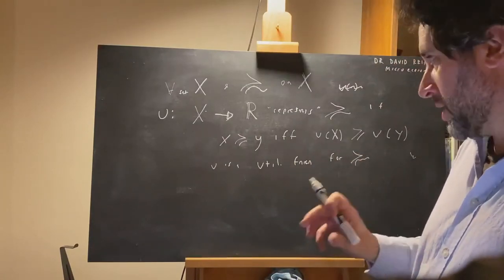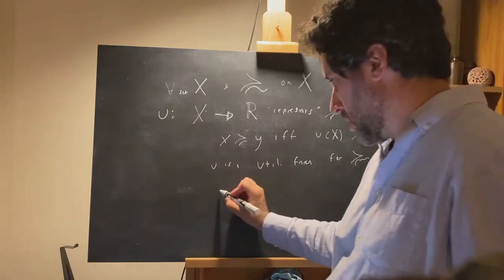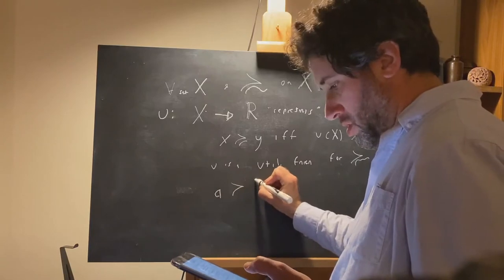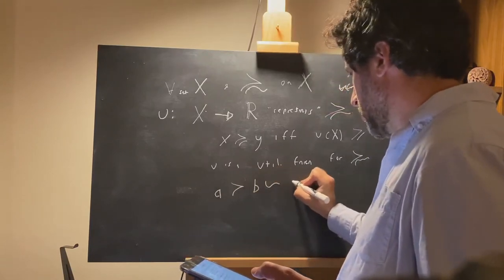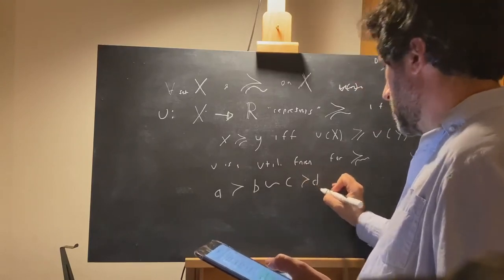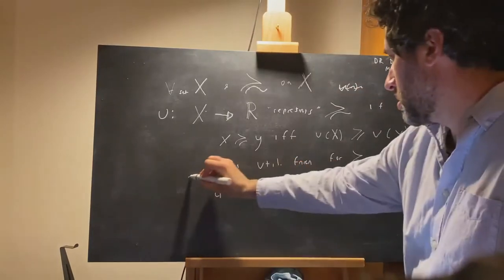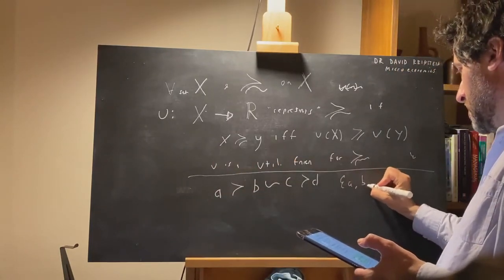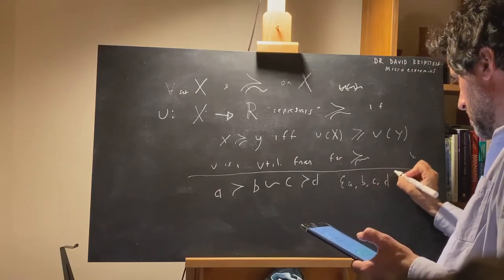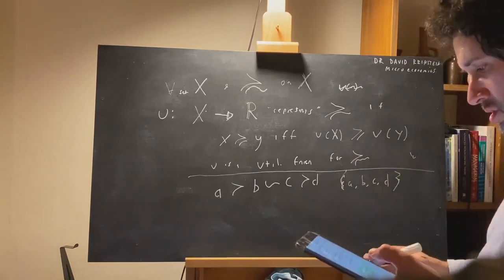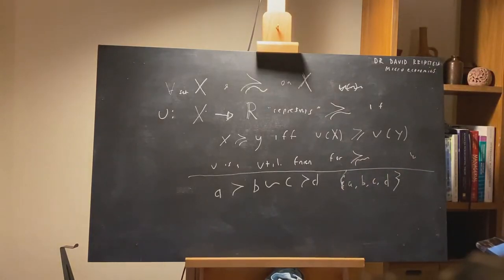So, imagine the preferences over certain elements, such that A is strictly preferred to B, which is indifferent to C, which is strictly preferred to D, on the set where you can choose between A, B, C, and D. Can you construct a utility function that represents these preferences? That's an exercise.